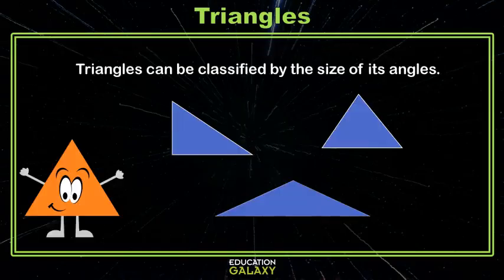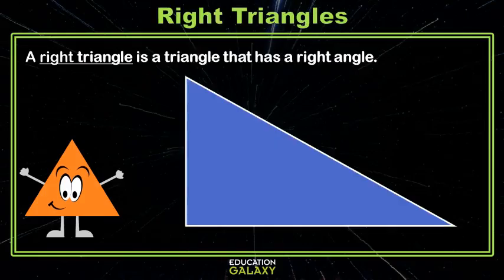Triangles can be classified by the size of its angles. A right triangle is a triangle that has a right angle. That means one of its angles is 90 degrees.